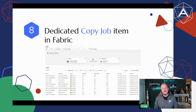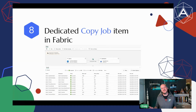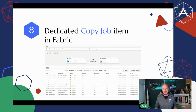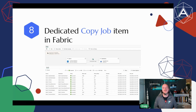Number eight on the list — in no particular order, I might add — is a dedicated copy job item in Fabric. The premise is that all those pipelines we've all created with a single copy job and nothing else... someone at Microsoft clearly got tired of seeing that and built a standalone Fabric item that lets you copy from A to B without needing a full pipeline. You've also got incremental copy in there too, which is really nice.